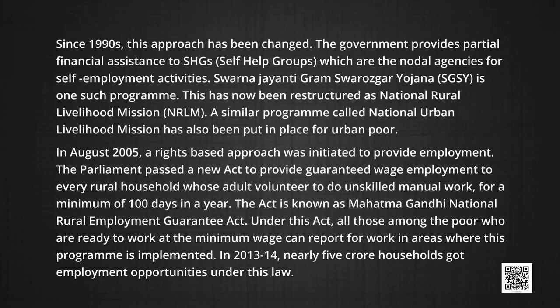In August 2005, a rights-based approach was initiated to provide employment. Parliament passed a new act to provide guaranteed wage employment to every rural household whose adult members volunteer to do unskilled manual work for a minimum of 100 days in a year. The act is known as the Mahatma Gandhi National Rural Employment Guarantee Act. Under this act, all those among the poor who are ready to work at minimum wages can report for work in areas where the program is implemented. In 2013-14, nearly 5 crore households got employment opportunities under this law.